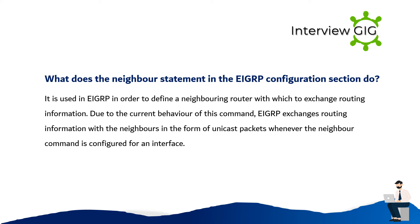What does the neighbor statement in the EIGRP configuration section do? It is used in EIGRP to define a neighboring router with which to exchange routing information. Due to the current behavior of this command, EIGRP exchanges routing information with the neighbors in the form of unicast packets whenever the neighbor command is configured for an interface.